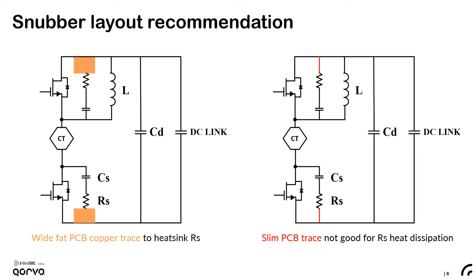The snubber resistor RS will dissipate a small amount of energy, but since this energy can only be taken out from PCB traces, it is recommended to have a wide, fat PCB copper area connected to the snubber resistor RS terminals. Typically the DC bus high and low should have large copper area to dissipate the heat.